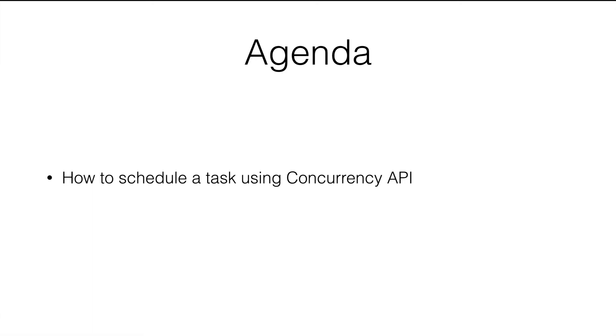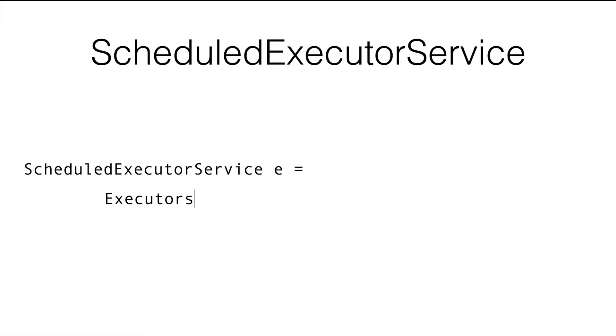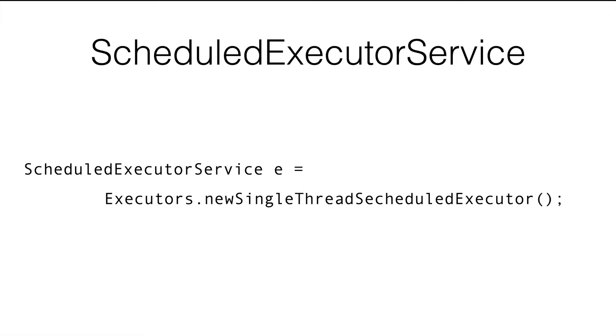For these kinds of scenarios where we want a task to happen at regular intervals, the Concurrency API provides a way to do that. It has an interface called ScheduledExecutorService designed for this purpose. To obtain an instance, we define a variable of type ScheduledExecutorService, use the Executors factory, and call the method newSingleThreadScheduledExecutor — previously we used newSingleThreadExecutor.